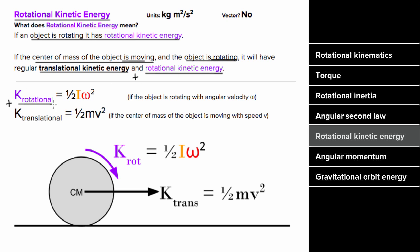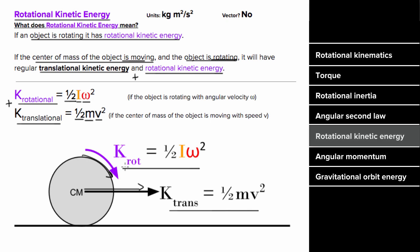The formula for rotational kinetic energy is one-half times the moment of inertia times the angular speed squared, which makes sense because the formula for regular kinetic energy is one-half times the mass times the regular speed squared. If an object is rotating it has rotational kinetic energy; if the center of mass is moving it has translational kinetic energy; if both, it has both. Rotational kinetic energy is not a vector — it's always positive or zero. The units are kilogram·meter²/second², which equals joules.